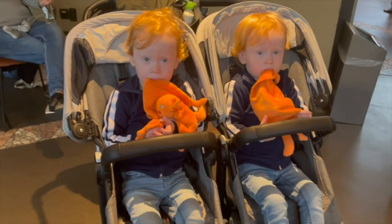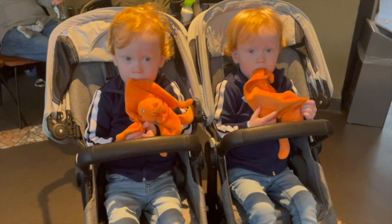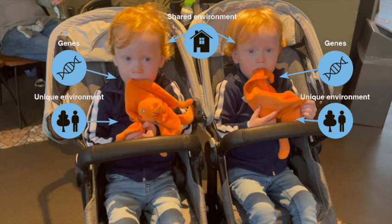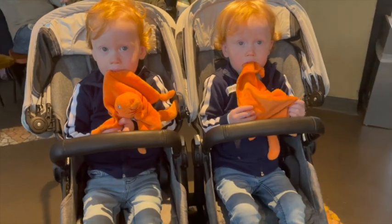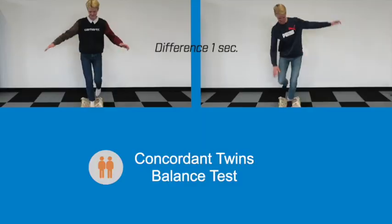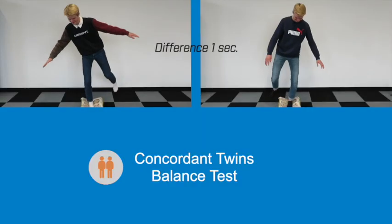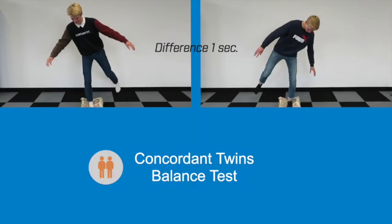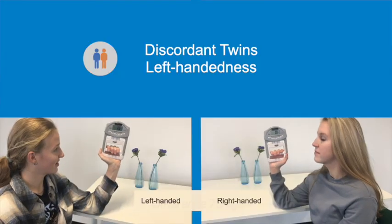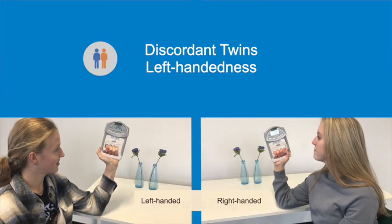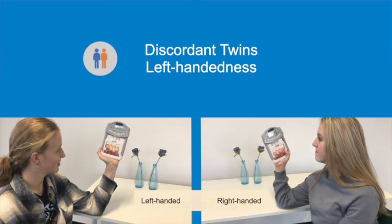The similarities between monozygotic and dizygotic twins can be explained by their genetic relatedness and the environment that they share. This is the basis for the estimation of heritability. If two twins have the same phenotype, they are concordant. If only one twin has the phenotype, they are discordant.